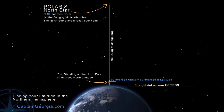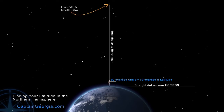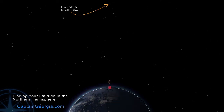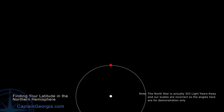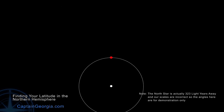So our position on the Earth is 90 degrees north latitude. Remember, latitude goes from zero at the equator to 90 at the North Pole. I should note that the North Star is actually 323 light years away, so obviously our scales here are a bit off — these angles aren't going to be precise, but they'll work for demonstration purposes. When you do this yourself and go out there and figure it out, the angles will be correct.